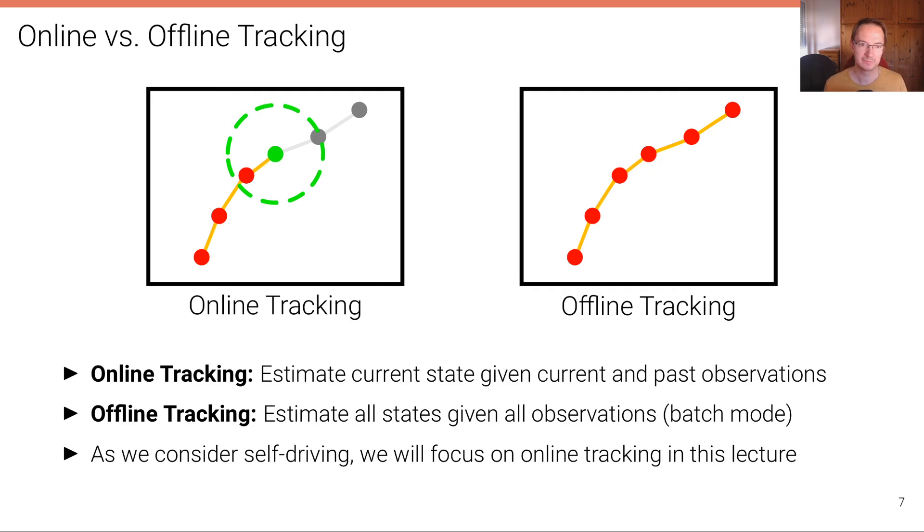There's two different types of tracking. The first type is called online tracking and the second type is called offline tracking. What are the differences? In online tracking, we estimate the current state given the current and the past observations. So here I indicated the current observation or the current state in green and the past states here, the past observations in red. So we are estimating the current state based on the past observations and the current observations. And that's online because we can do this for the current frame. We don't need to know the future in order to process the current frame.